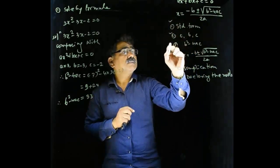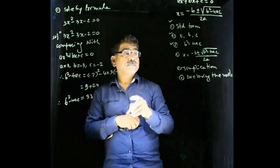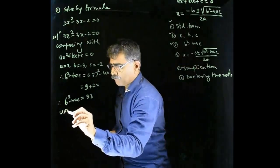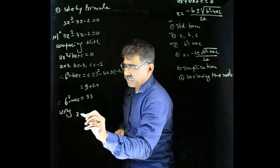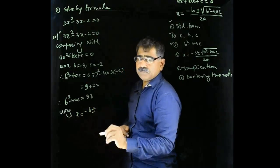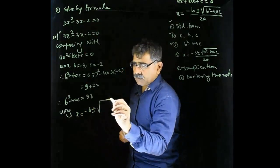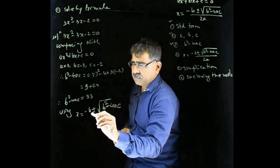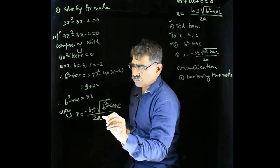First step, second step, third step. Now, writing formula. Using what we will use? x is equal to negative b, positive or negative, under root b square minus 4ac divided by 2a.